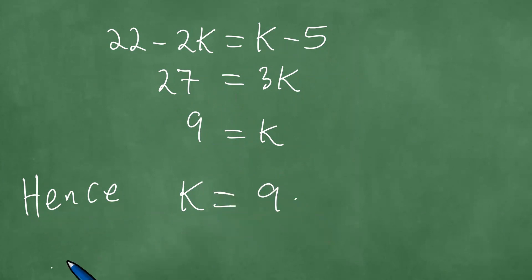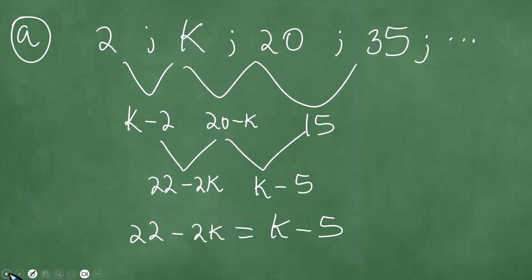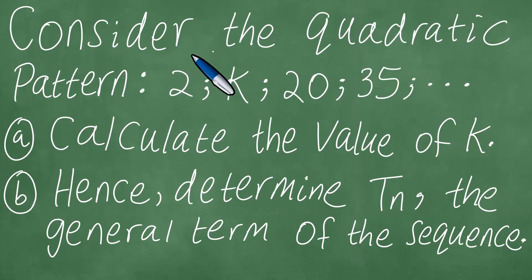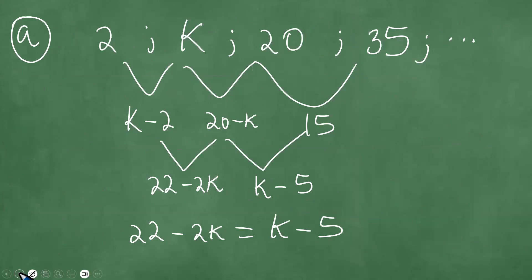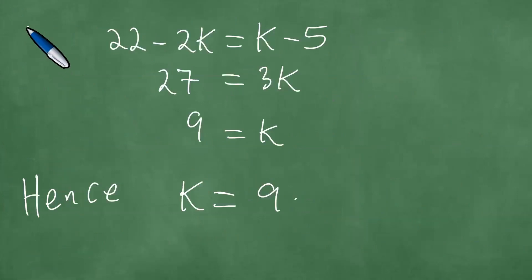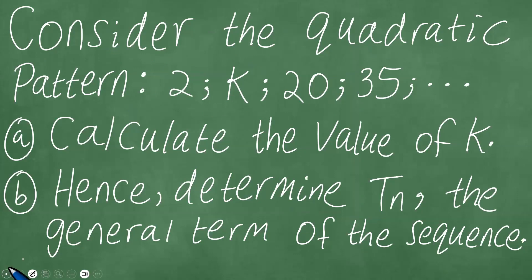So we have answered the first question, because the first question was calculate the value of k. We needed the numerical value of k, and we have just found that k equals 9. Then we have the second part of the question b, which is hence determine Tn, the general term of the sequence.